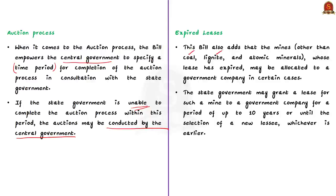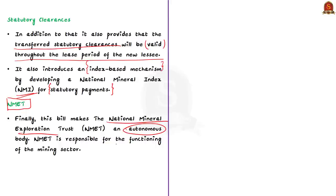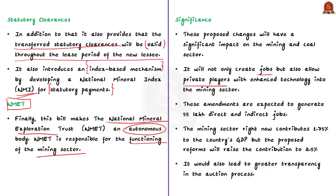The bill also adds that mines other than coal, lignite, and atomic minerals whose lease has expired may be allocated to a government company, and the state government may grant a lease for up to 10 years or until the selection of a new lessee, whichever is earlier. Additionally, the bill provides for transferred statutory clearances to be valid throughout the lease period of the new lessee. It also introduces an index-based mechanism by developing a National Mineral Index (NMI) for statutory payments, and makes the National Mineral Exploration Trust an autonomous body responsible for functioning of the mining sector.